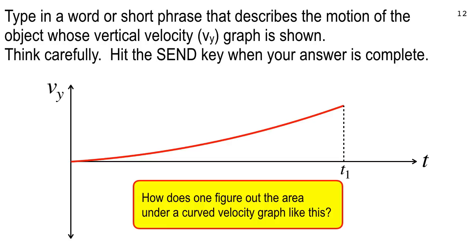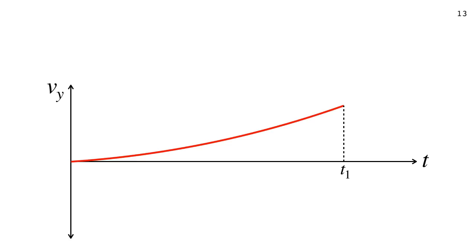Now we're going to take notes on this. Make sure you have a good sketch of this graph and give it a little curve. This is the Hidden Figures problem — what Katherine Johnson and those mathematicians at NASA did so dependably. They figured out graphs like this: how do you figure out the area when the top of the graph is a curve, not a straight line?